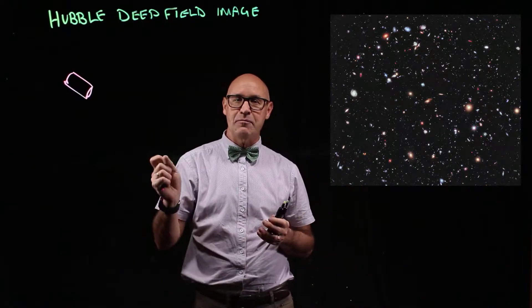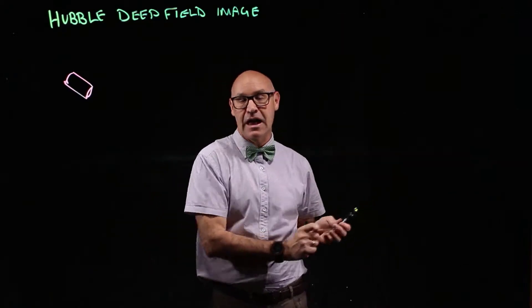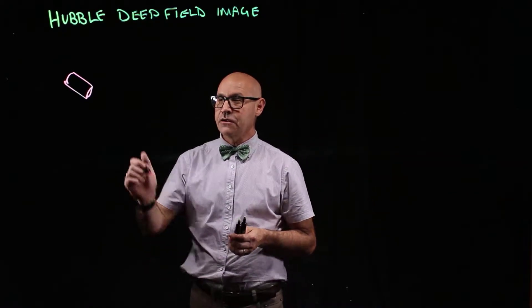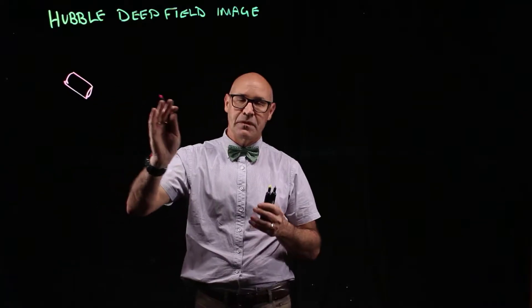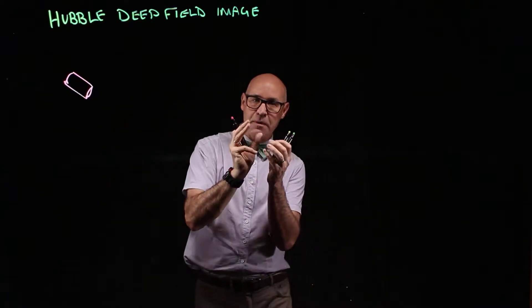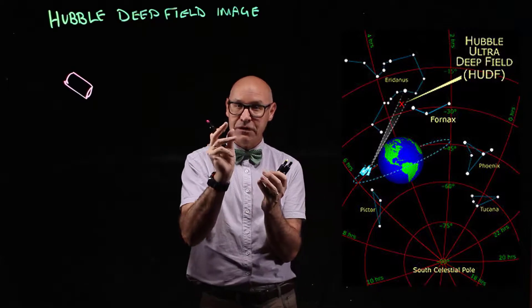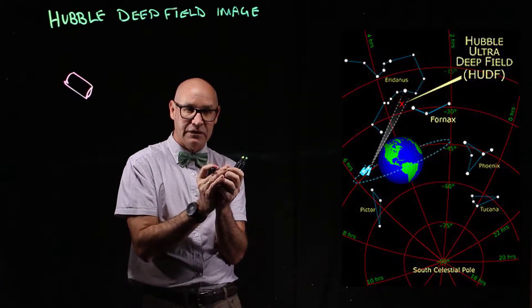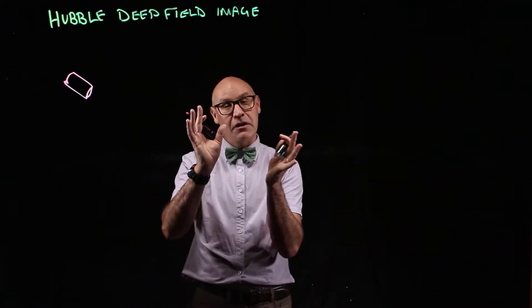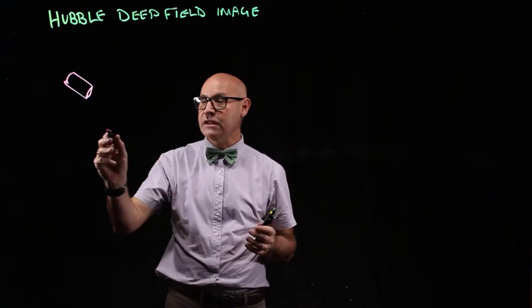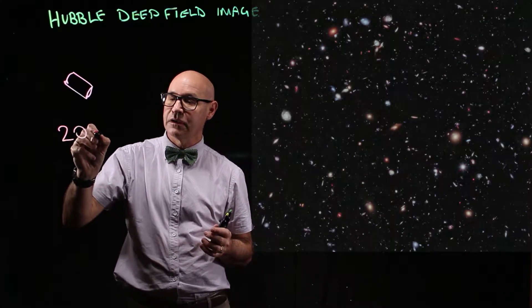The resolution is even better and they're looking even further out into space. So the Hubble Deep Field, they picked a very small part of the sky that has very few visible stars in it. But in their actual image, it's got 20,000 galaxies.